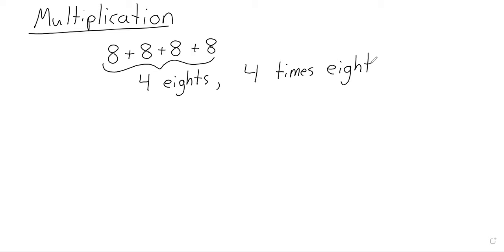Let's see where this terminology comes from. "Four eight times" — but if we put the 'times' at the end, the four and the eight might get mixed up and you might think we're saying 48. So we put it in the middle: four times eight. And we write it as eight dot four, or eight x four.